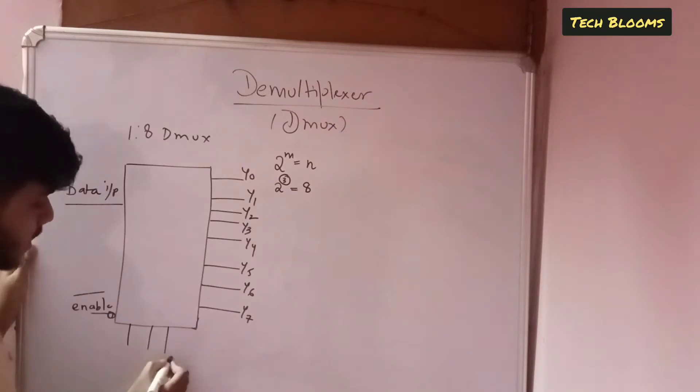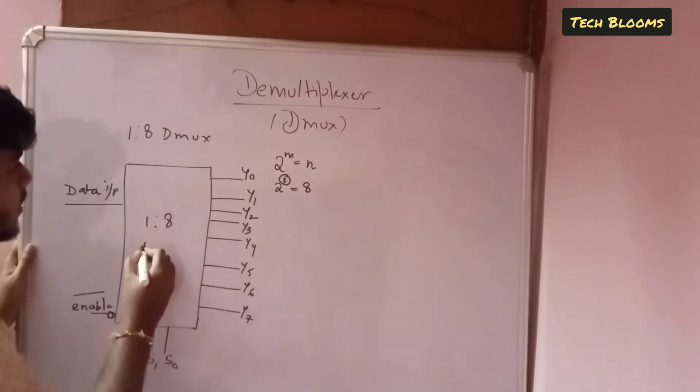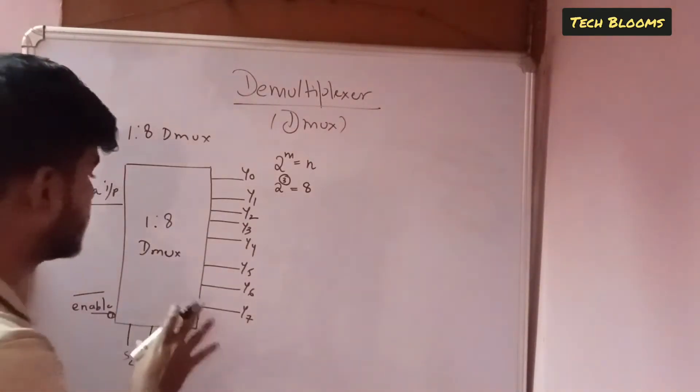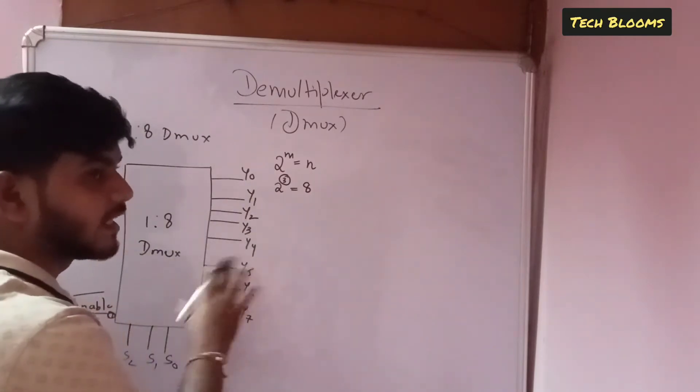So you have 3 select lines. That is S0, S1 and S2. So this is basically 1 is to 8 dmux. This is how you construct the logic diagram. Now from here we will derive the truth table.